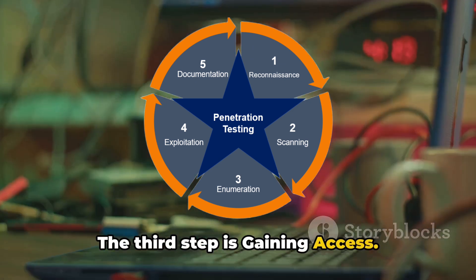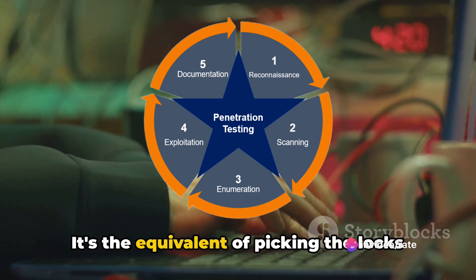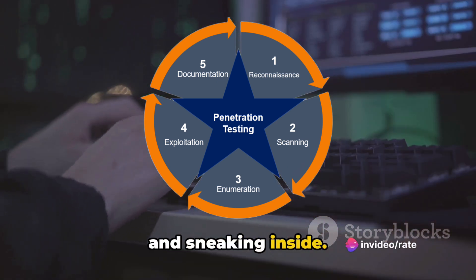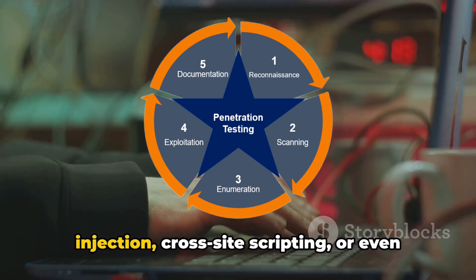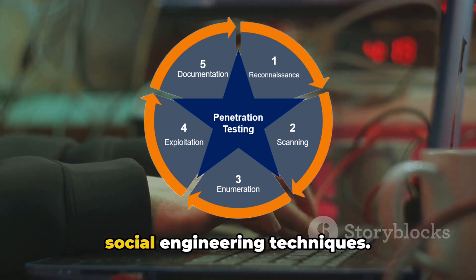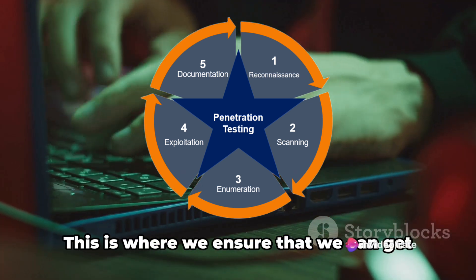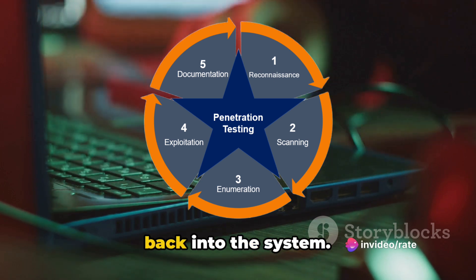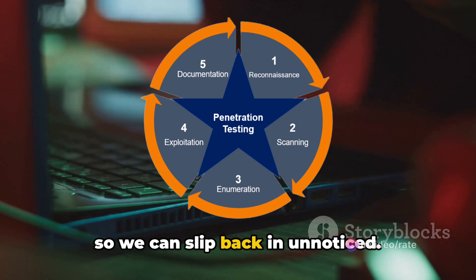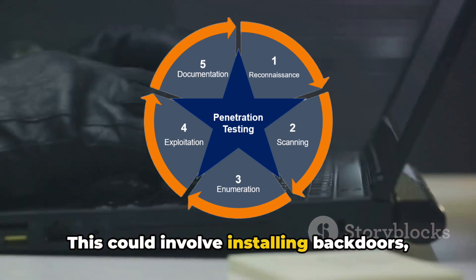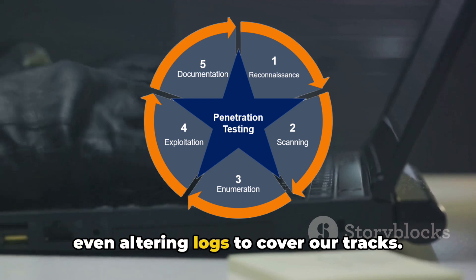The third step is gaining access. This is where we exploit the vulnerabilities we've found. It's the equivalent of picking the locks and sneaking inside. We might use various methods such as SQL injection, cross-site scripting, or even social engineering techniques. Once we're in, we move to the fourth step: maintaining access. This is where we ensure that we can get back into the system, like leaving a window slightly ajar so we can slip back in unnoticed. This could involve installing backdoors, creating additional admin accounts, or even altering logs to cover our tracks.